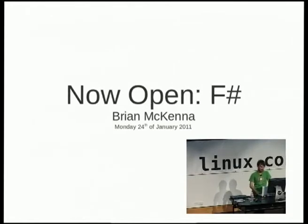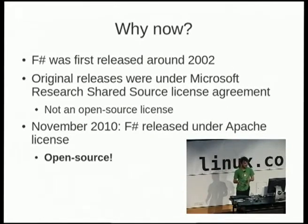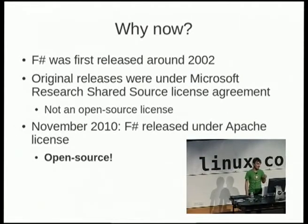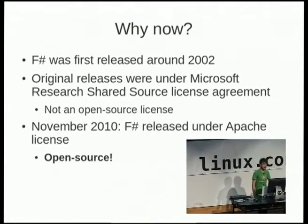I'll just get straight into the talk because we don't have much time. So why am I talking about F-sharp now? Well, F-sharp was first released around 2002, so it's kind of getting old according to programming language history. Why would I be talking about it in 2011? The old versions of F-sharp up until November were released under the Microsoft Research Shared Source License Agreement — not an open source license. You could download the source code and compile it on Windows, but you weren't allowed to distribute your changes. It was only for personal use.